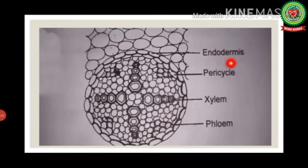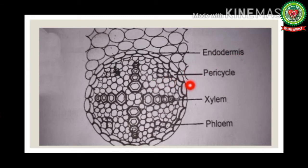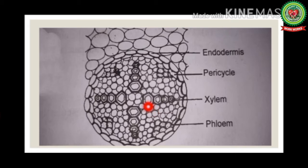Next is the stele region, which forms the inner cylinder. All the tissues on the inner side of endodermis — such as pericycle, xylem, phloem, vascular bundles, and pith — form the stele region. The stele is bound by the pericycle.